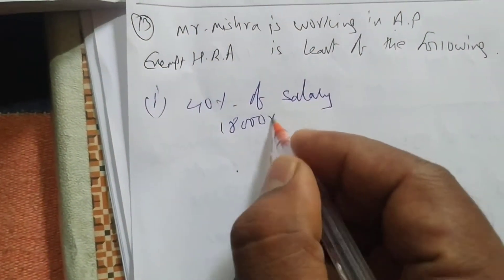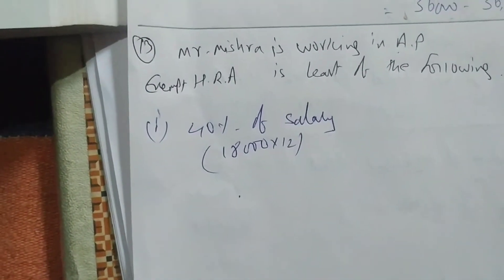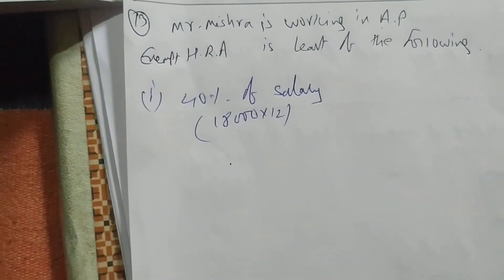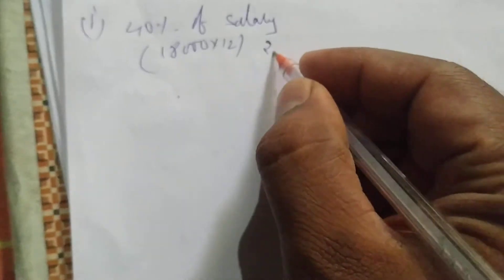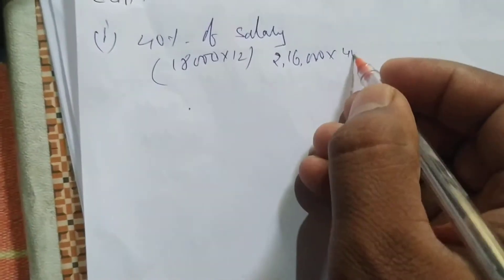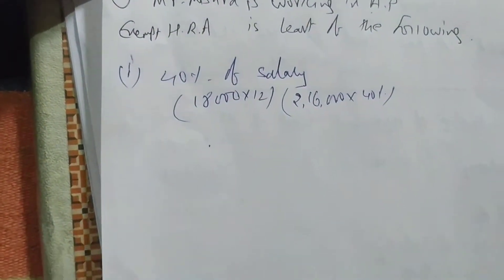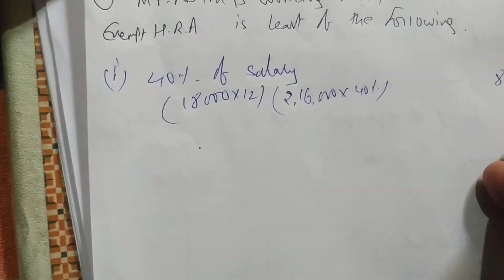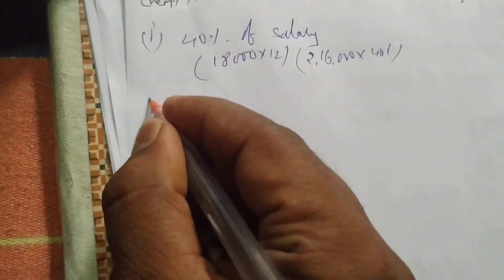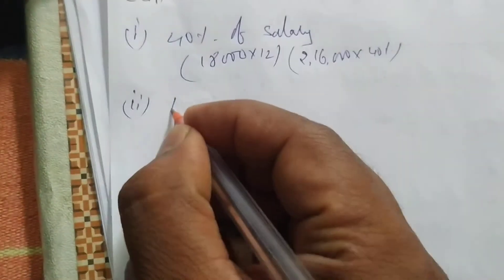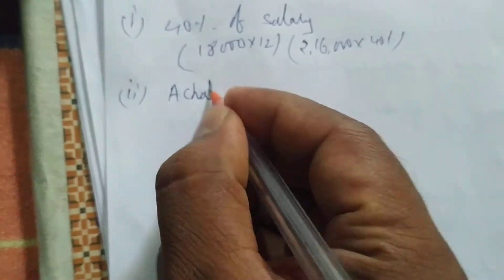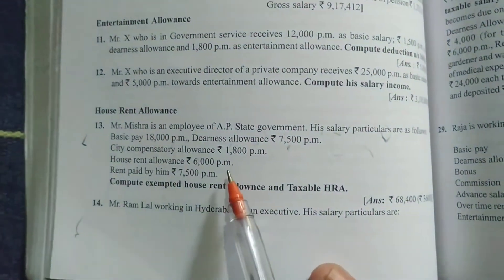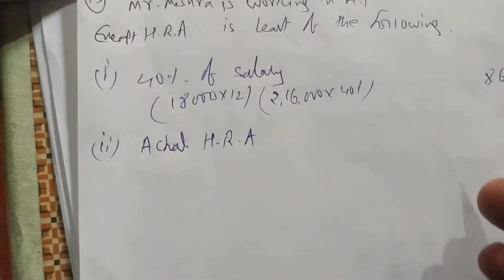First: 40 percent of salary. We take 40 percent because he is staying in Andhra Pradesh, which is non-metro. Salary is only basic pay: 18,000 per month into 12 months = 2,16,000 per annum. 40 percent of 2,16,000 = 86,400. Second: actual HRA received = 6,000 per month into 12 = 72,000.